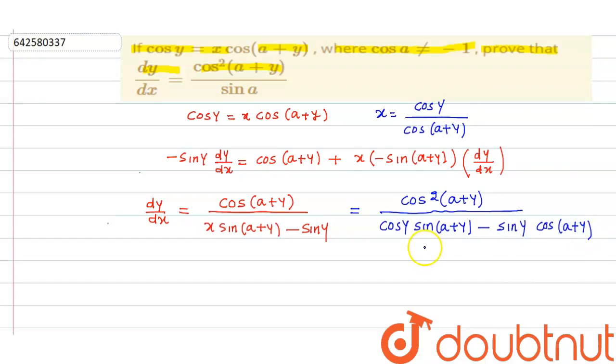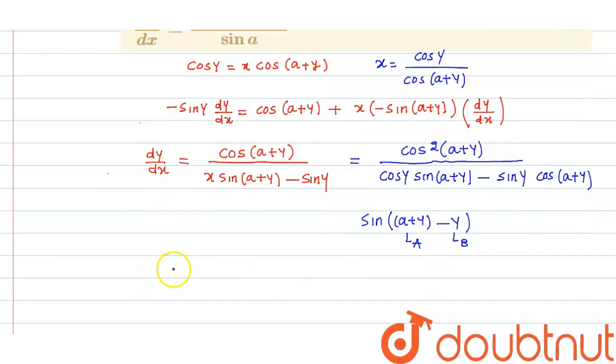Now if you look at this carefully, this is a formula of sin(a + y) minus y. So where sin a, this formula becomes like sin a cos b minus sin b cos a. So here a is a + y and b is y. So what we do is just apply this formula.